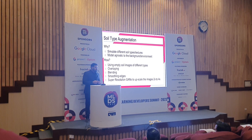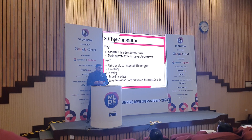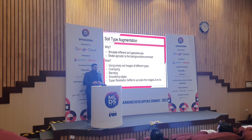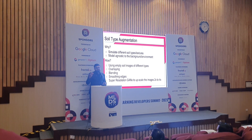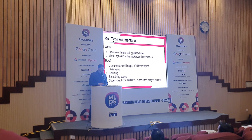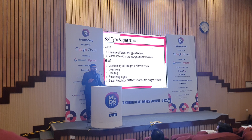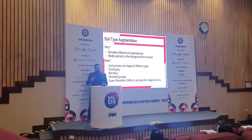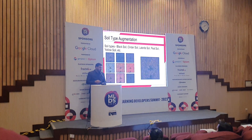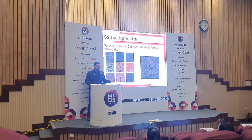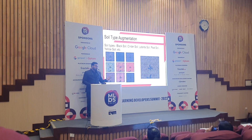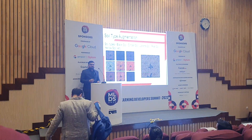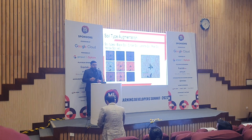For implementation, we used empty soil images and overlaid them with the original soil in the public data by blending them to different extents. This was done to preserve features of the original image like shadows and other environmental agents. This was followed by smoothing the edges to make them more realistic, and we used super resolution GANs to upscale them two to four times. The results show the original image followed by different soil type augmentations, with a GIF showing the transition between different soil types.